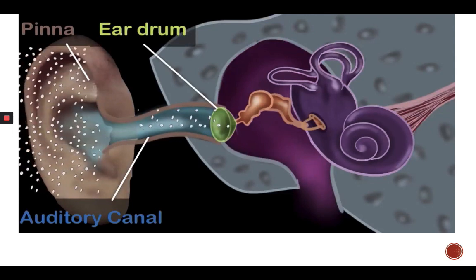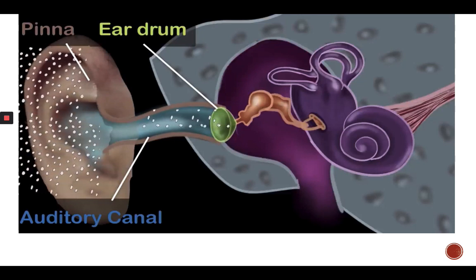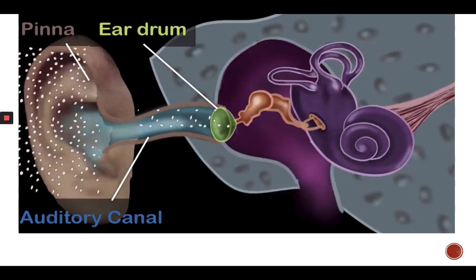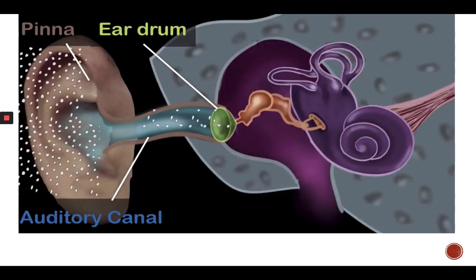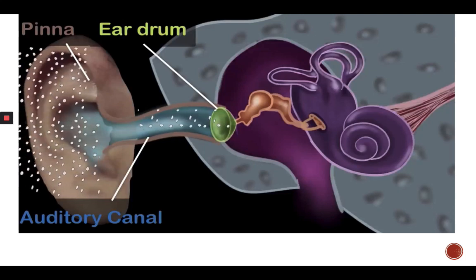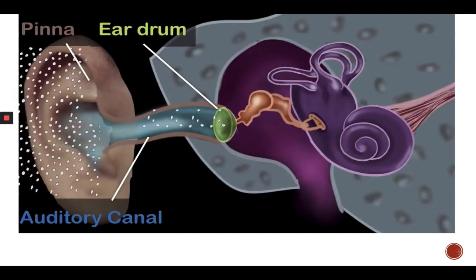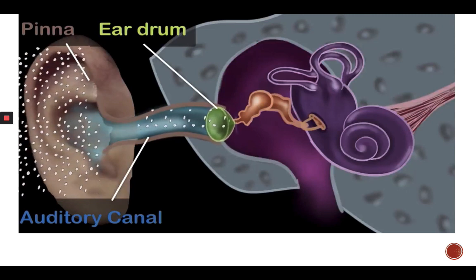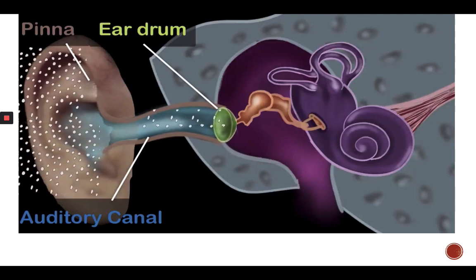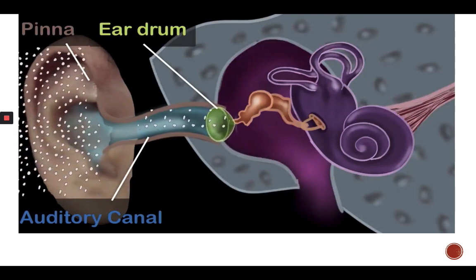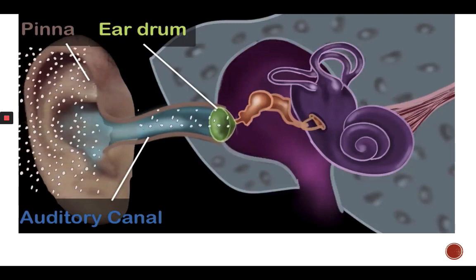The sound waves pass through the auditory canal and eventually meet the eardrum. The eardrum is a transparent membrane which is super sensitive to vibrations in the air. As the air vibrates, the eardrum also starts vibrating, just like the skin of a drum. The eardrum also separates the outer ear from the middle ear.